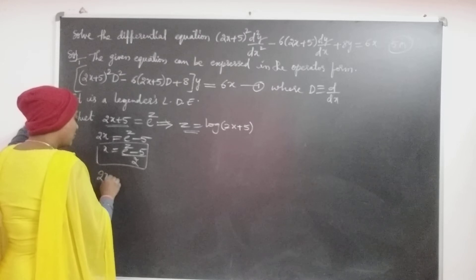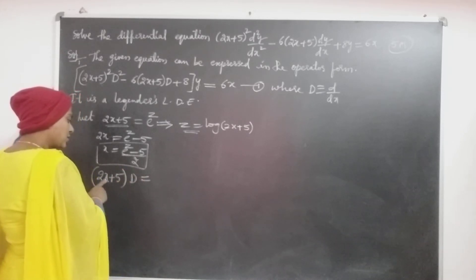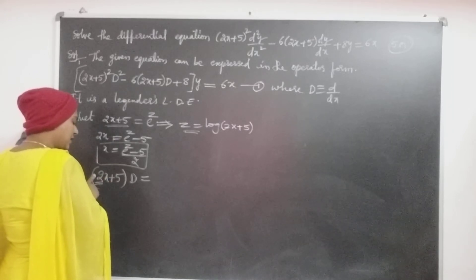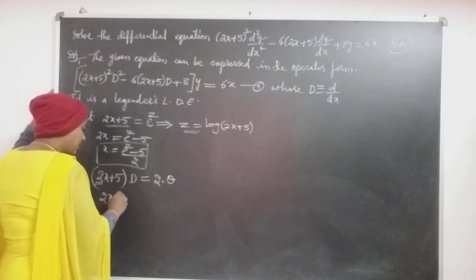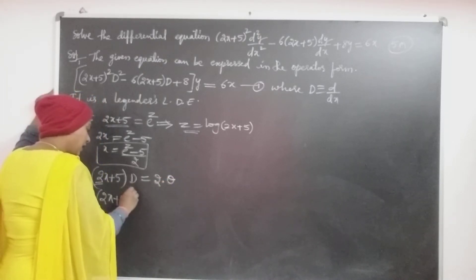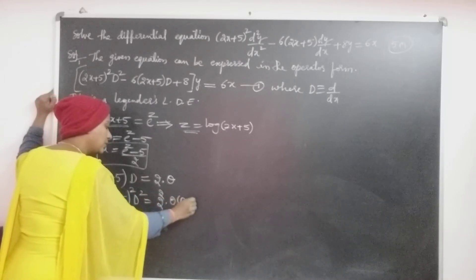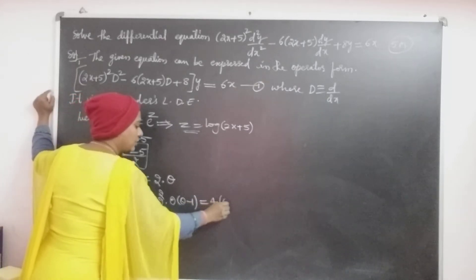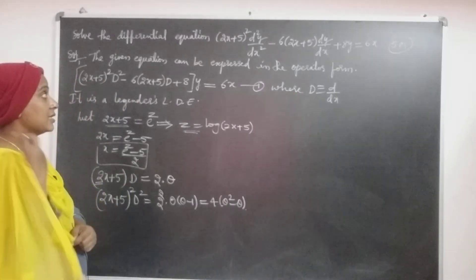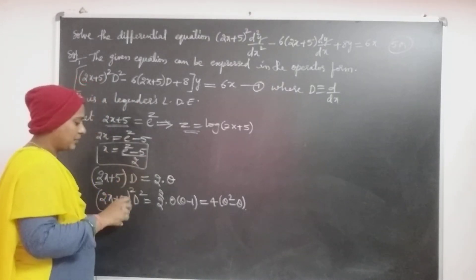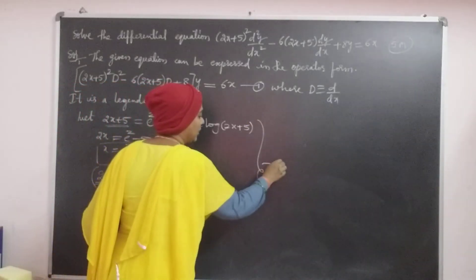Next, (2x+5)·D equals the x-coefficient value into θ. Next, (2x+5)²·D² equals 2² times θ(θ−1), that is 4(θ² − θ). Here the derivative is up to 2², so we take up to D² only. Let it be equation 2.